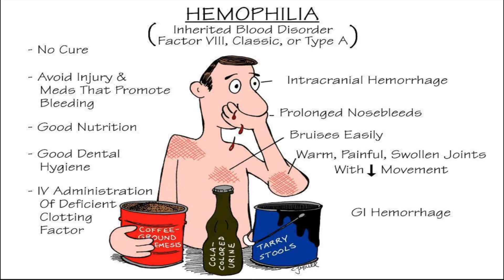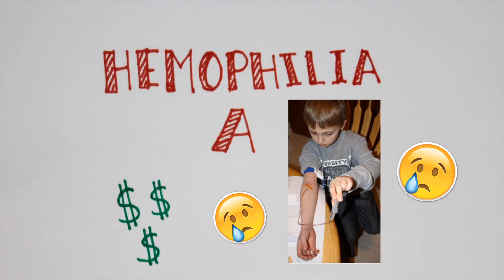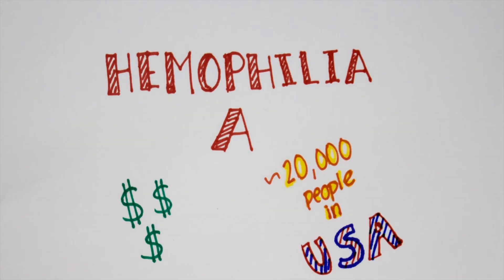Hemophilia A is treated by replacement therapy with injections of concentrated Factor VIII at least three times per week, plus prophylactic administration during bleeding episodes. The Factor VIII has a half-life of about 10 minutes due to its rapid degradation, and so the injections of concentrated Factor VIII don't last for very long. This can get very expensive and tedious, especially when you have to do it for your entire life.